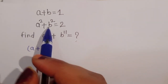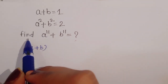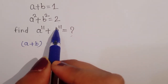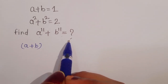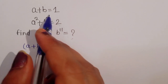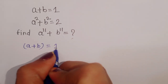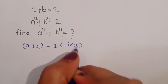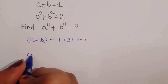a plus b is equal to 1 and a square plus b square is equal to 2. We have to find out the value of a power 11 plus b power 11. First we have to see what is given: a plus b is equal to 1.